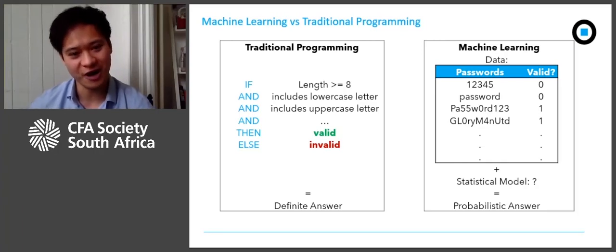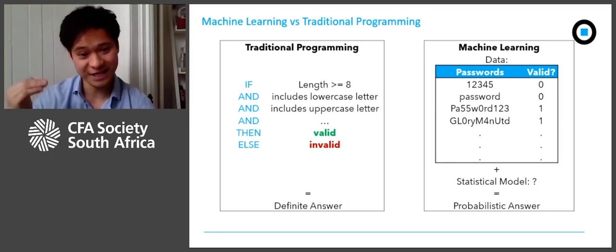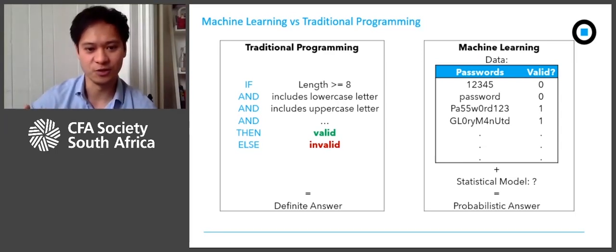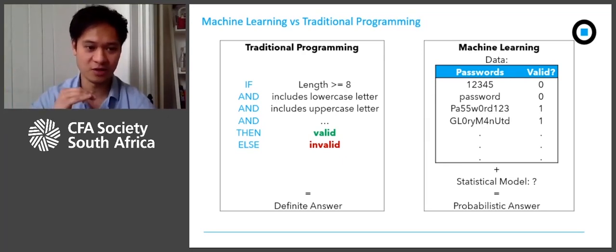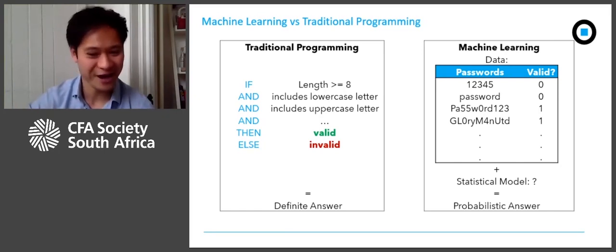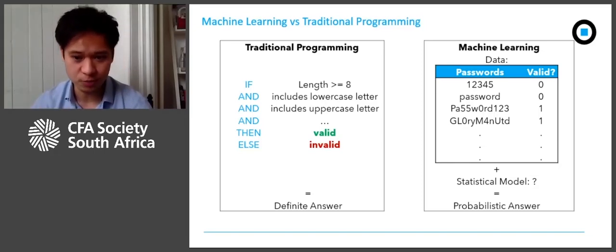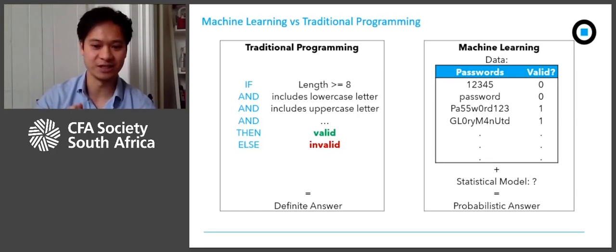The first example, '12345', is not valid because it's not the right length and doesn't include an uppercase or lowercase letter. The second example — which I hope none of you use — is the word 'password', and this is not valid because even though it's the right length, it does not include an uppercase letter. The third example is valid because it passes all the criteria. And the last one, referencing your favorite football team, is also valid because it fulfills all the criteria.